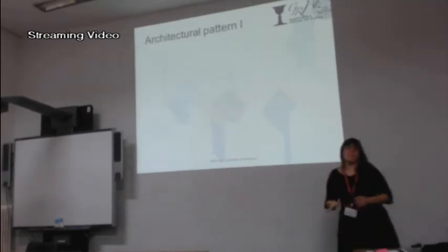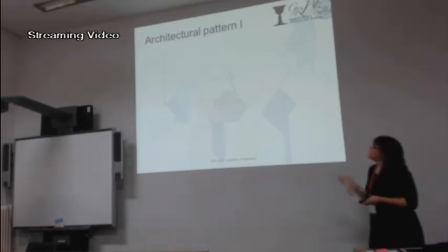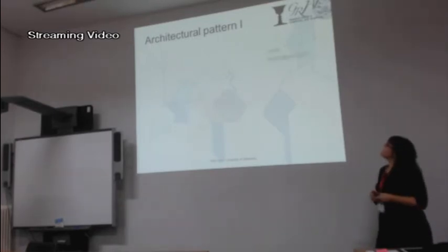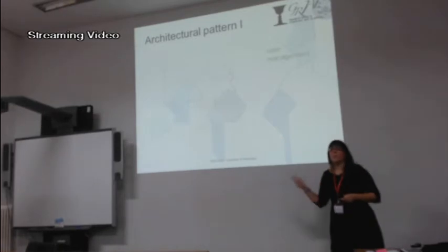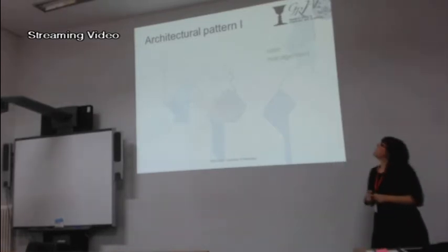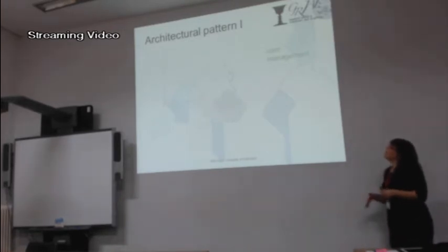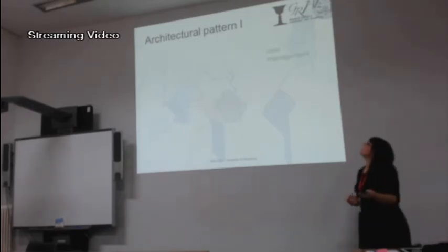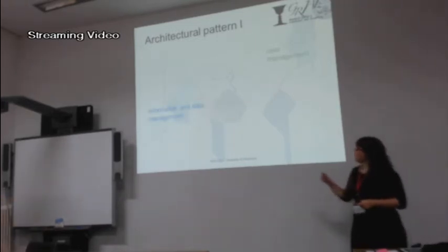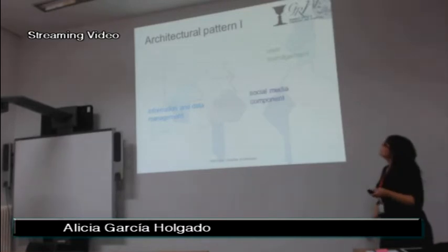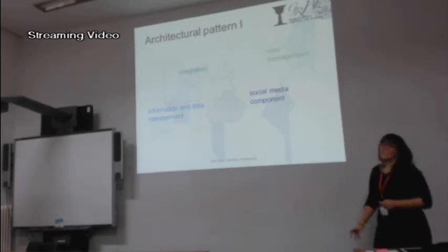Analyzing these different ecosystems, we based our analysis on five main criteria. In the first, user management, one of the most important things in an ecosystem because the login and use of the platform is very important. In the second, information and data management, because this is the goal of the ecosystem. In the third, the social media component. And in the fourth, the integration.